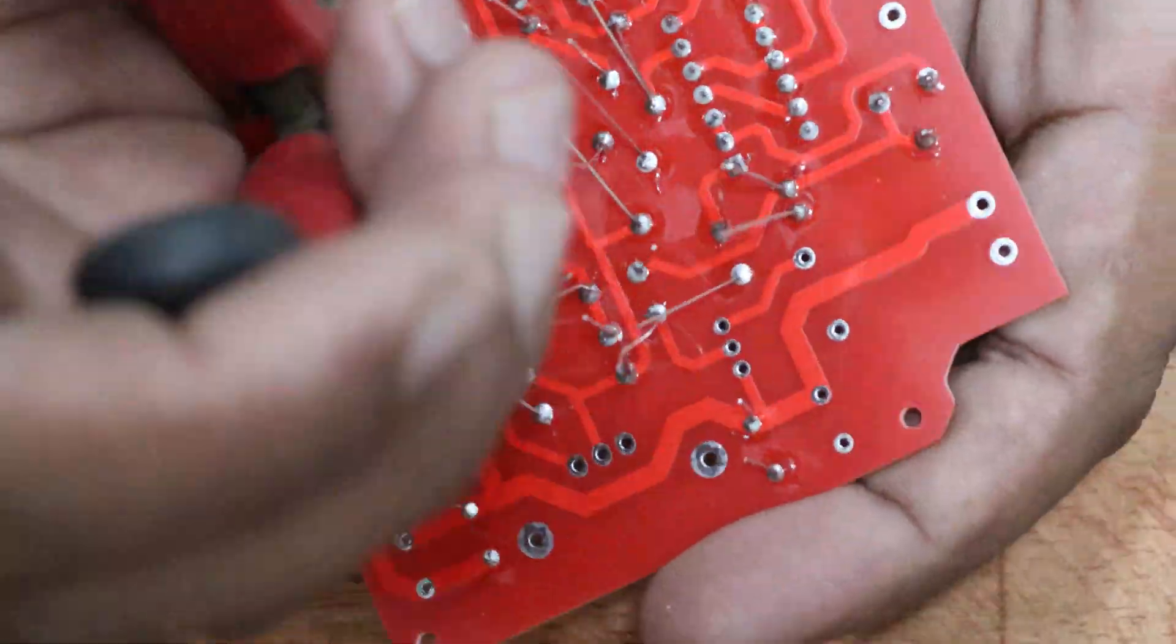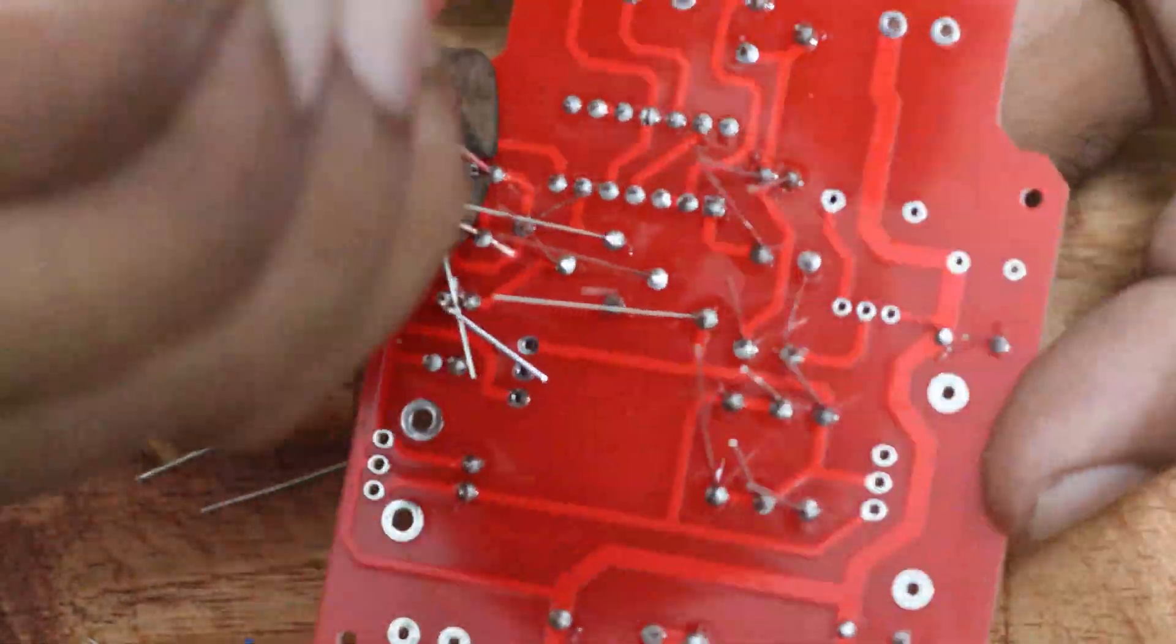Before starting the next part, I decided to cut all the excess parts of the pins. After cutting, clean the board correctly. Use a wire cutter to cut the pins.